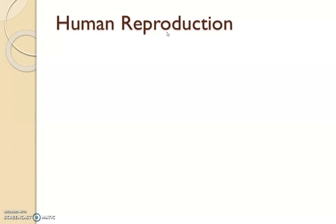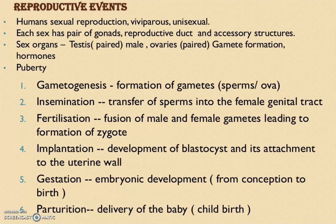Hello, students. Today in this lecture we are going to discuss human reproduction. Humans have sexual reproduction; they are unisexual organisms and viviparous, meaning they directly give birth to their young ones. They have a pair of gonads, reproductive ducts, accessory structures, and sex organs — testes in males and ovaries in females. There is also a process of gamete formation and a puberty stage.